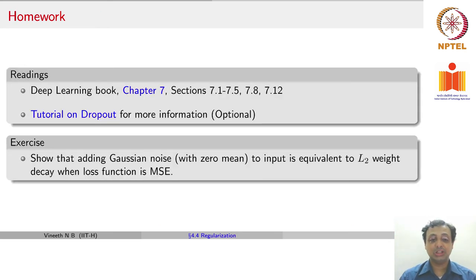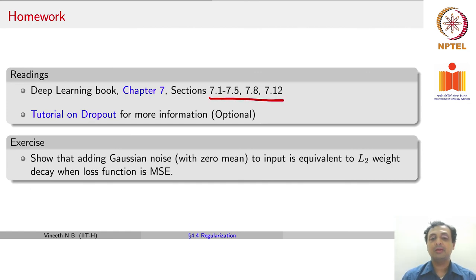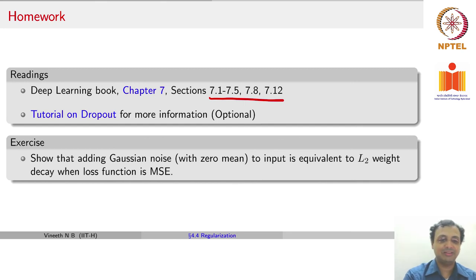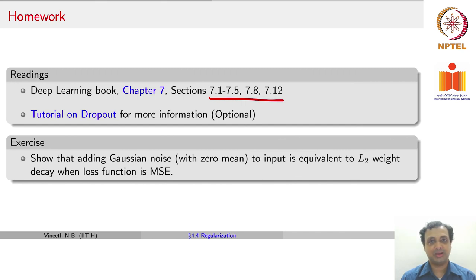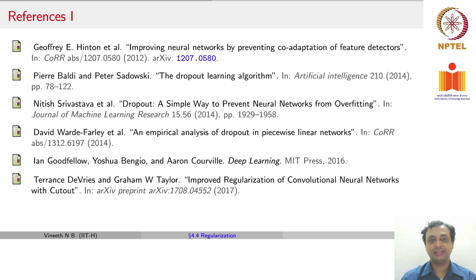With that, your homework for this lecture is Chapter 7, sections as given. If you would like a tutorial on dropout to understand it better, please look at the provided link. Your exercise for this lecture is to show that adding Gaussian noise with zero mean to the input is equivalent to L2 weight decay when your loss function is mean square error. Give it a try. Here are the references. Thank you.